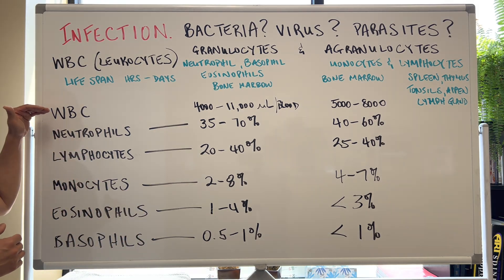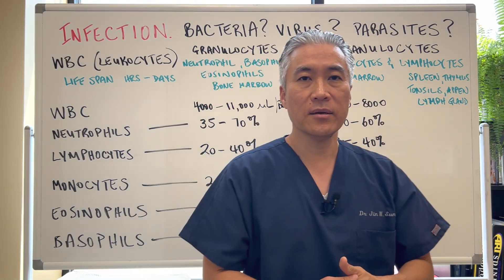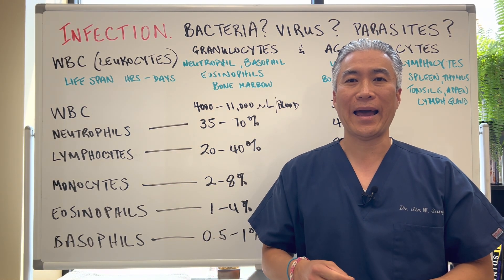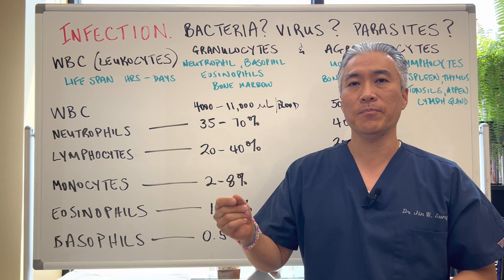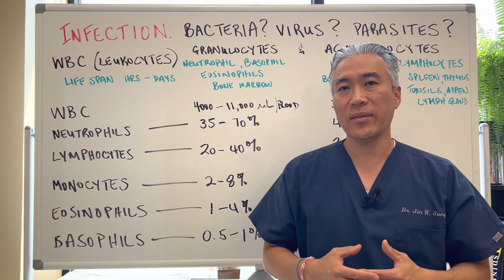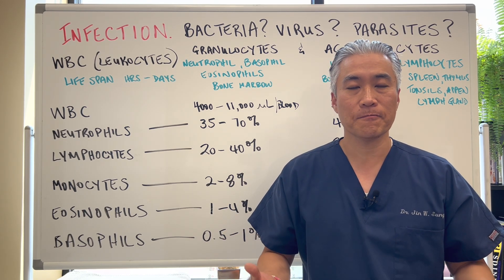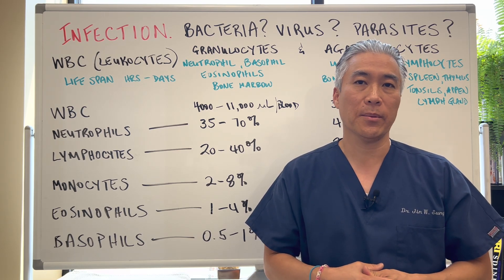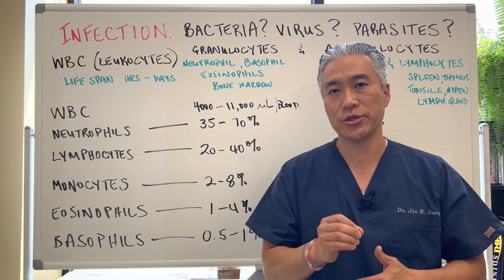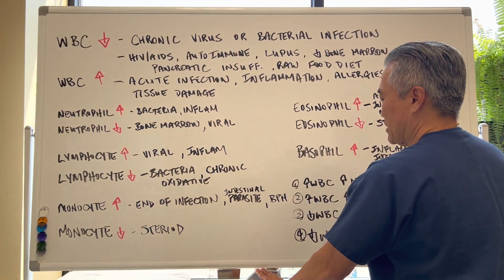I'm going to go over each individual one — when they're elevated or decreased. They're not perfect in terms of accurately diagnosing a problem. We're going to give you clues as to what might be going on, and then if you need to, follow up with advanced testing to figure out exactly what the problem might be. But this will give you clues as to what type of infection you might have.